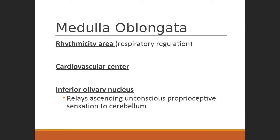When we get to the brain stem we see many areas for vital function, particularly respiratory and cardiovascular regulation. In the medulla we see rhythmicity areas — in AMP 2 you'll learn they're divided into a dorsal group controlling the transition between resting inhalation and exhalation, and a ventral group that takes over during more active breathing such as during exercise. For now, lump them together as the respiratory area of the medulla oblongata.